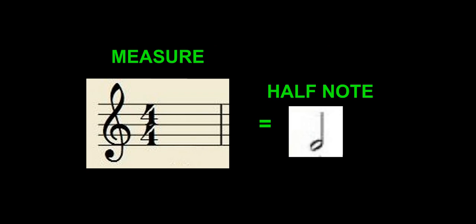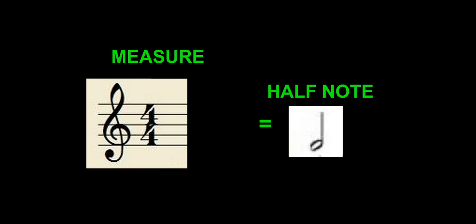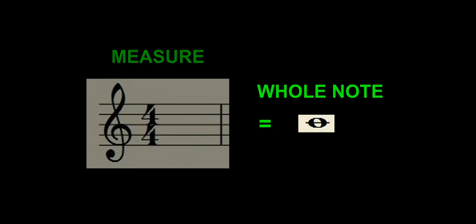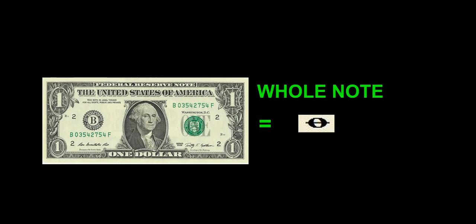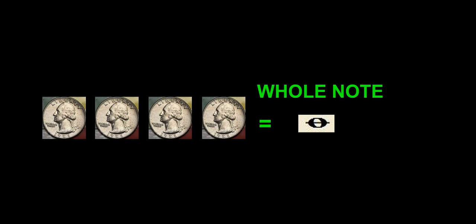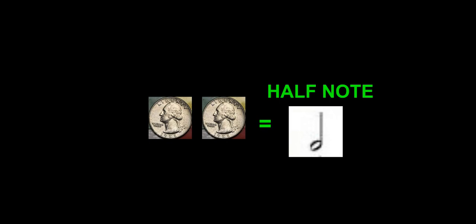Now that we know that one half of a whole note is a half note, what about half of a half note? To help us figure this out, we're going to think of our measure, or our whole note, like a dollar — a one dollar bill. We're going to exchange this one dollar bill for four quarters. That's going to represent our whole note. We're going to take half of our whole note, and when we do that we get a half note — and we take half of our four quarters, and we get two quarters.